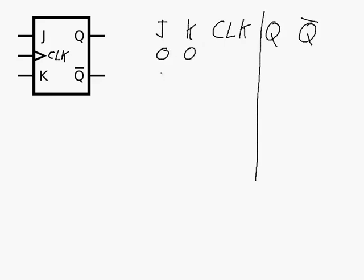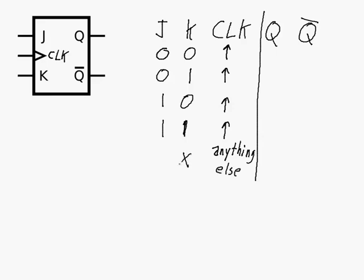There are four different combinations that J and K can be: 0,0 / 0,1 / 1,0 / and 1,1. For a rising edge triggered flip-flop, we only care about those values when the clock is going from low to high. If anything else is happening — a falling edge or no change — we don't care what the J and K values are. Q is going to stay at its current Q value, and Q-bar will stay at its Q-bar value.